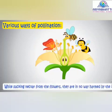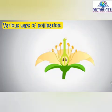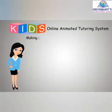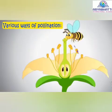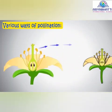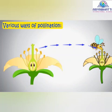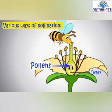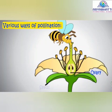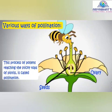While insects feed on the nectar present in the flowers, pollen gets attached to the body of the insects. When these insects visit another flower for nectar, pollens get transferred to the sticky top of the pistil. Then, by way of a long tube called the style, pollens reach the ovary where ovules are present and fertilization occurs.